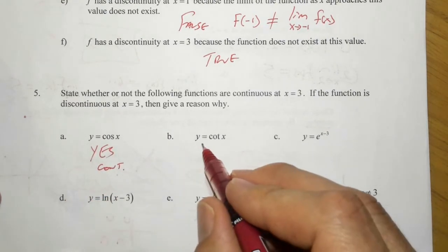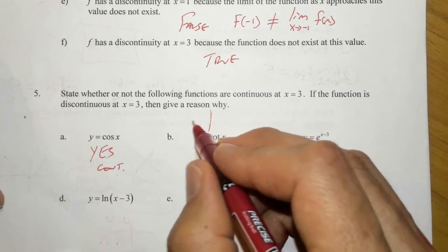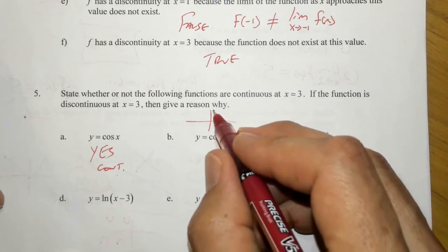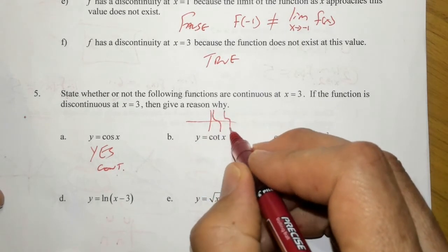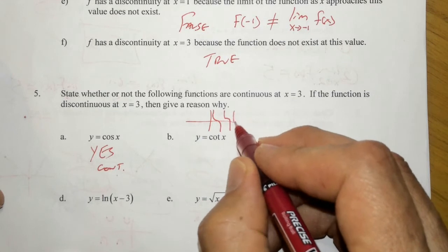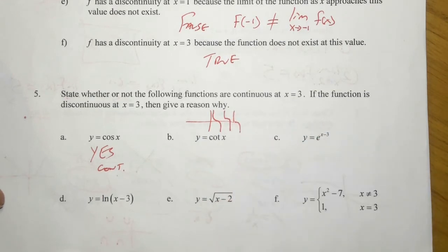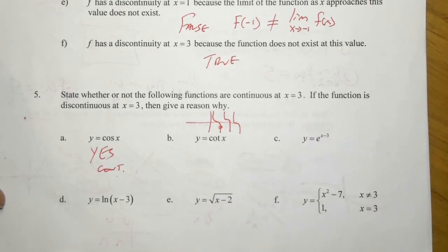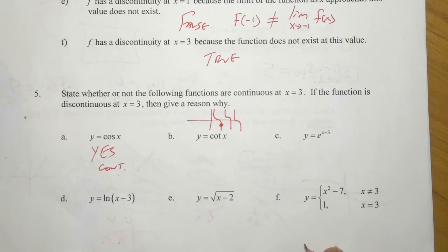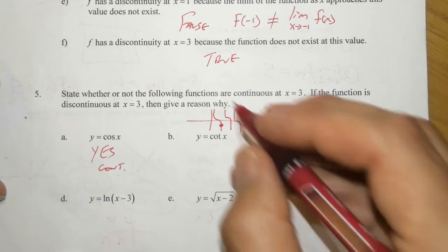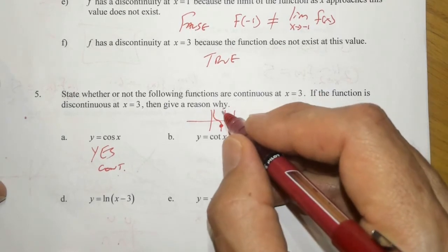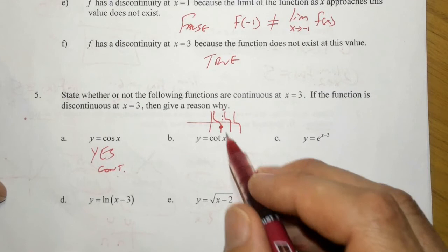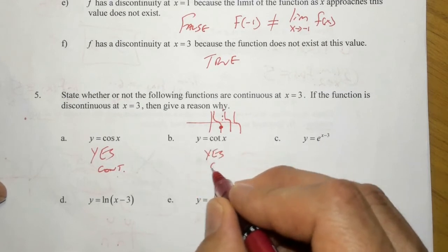Part b: y equals cotangent of x. Cotangent's graph definitely has some discontinuities. When x equals 3, it's down here — there's no discontinuity there. The discontinuity occurs a little bit after 3, at 3.14159, better known as pi. But at 3, we're okay, so yes, this is continuous.